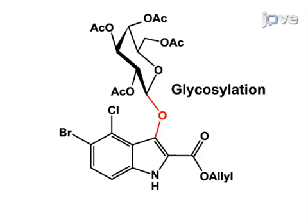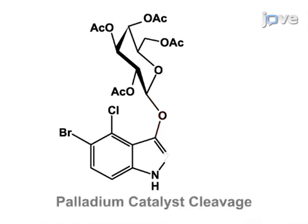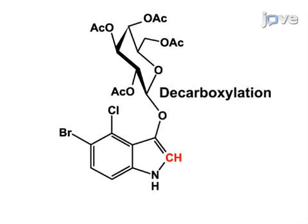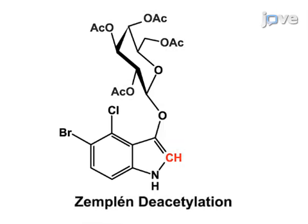Next, the allyl ester is cleaved by a palladium catalyst, and subsequent silver-mediated decarboxylation is applied to create the acetylated indoxylglycoside. The final step is Zemplén deacetylation to yield the unprotected indoxylglycoside.